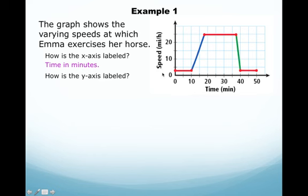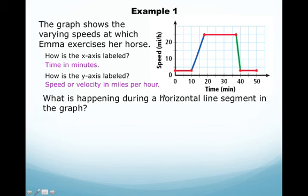How is the y-axis labeled? The y-axis is this line right here and it's labeled by the speed in miles per hour.